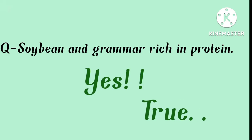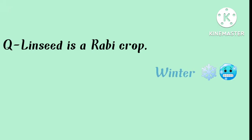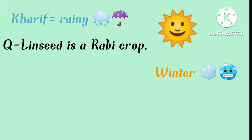Our second question is: is linseed a rabi crop? Rabi crops are grown in winter season because they need a lot of sunlight, and winters provide plenty of sunlight. Kharif crops are grown in the rainy season because they need a lot of water, so rainwater itself supplies the plants. Linseed is a fat-based crop and is grown in winter season, therefore it is true that linseed is a rabi crop.